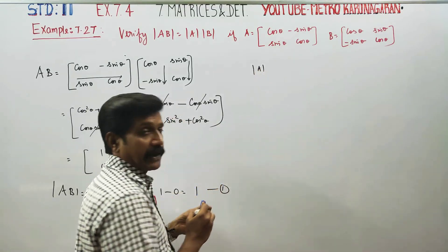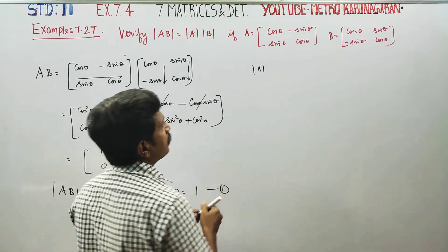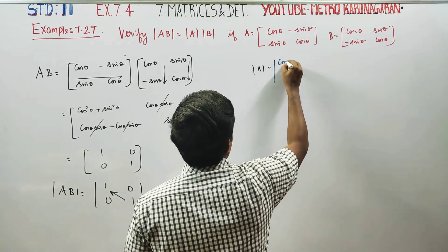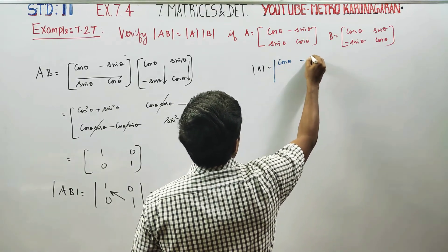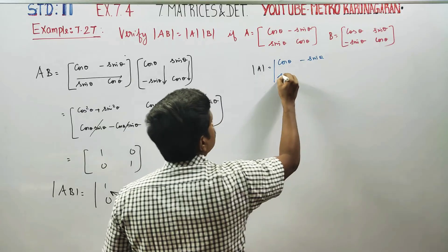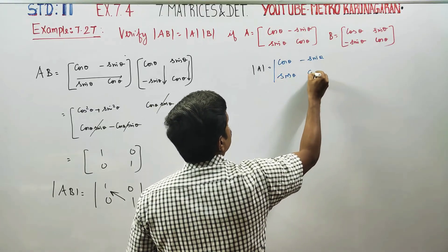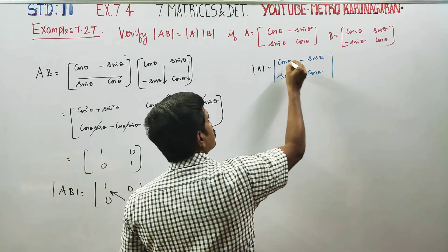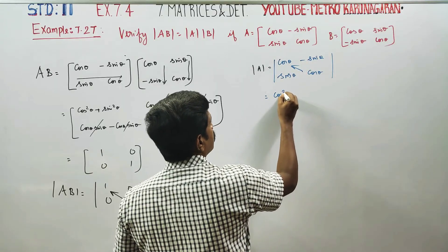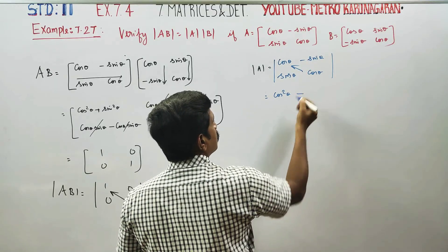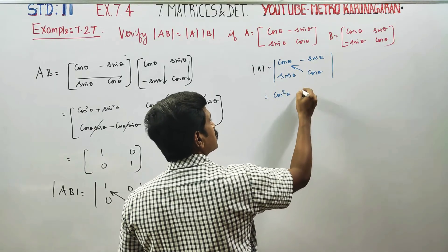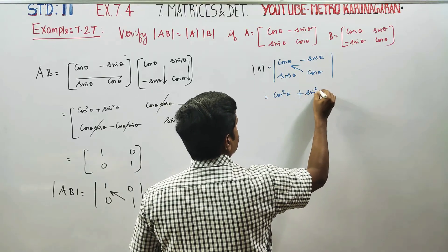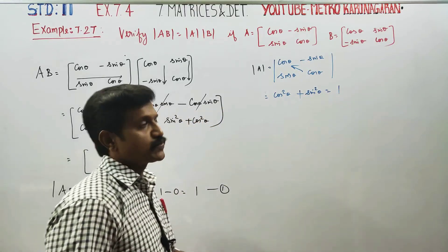Determinant of A: the matrix has cos theta, minus sin theta, sin theta, cos theta. Cos into cos is cos squared theta, minus here a minus, plus sin squared theta. Cos squared theta plus sin squared theta equals 1. So determinant of A equals 1.